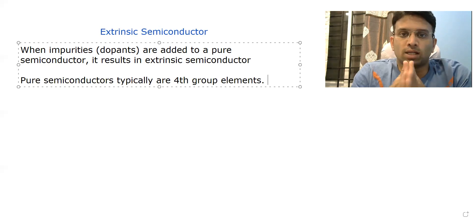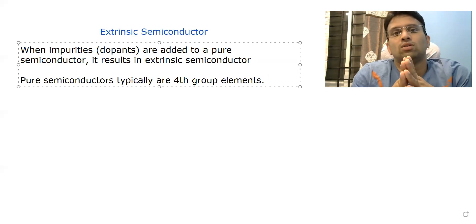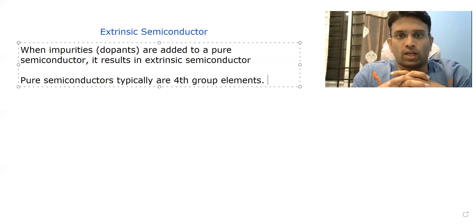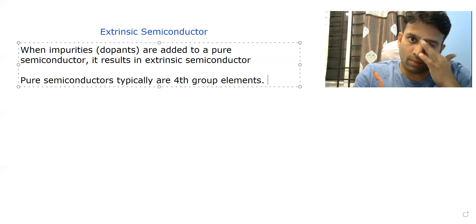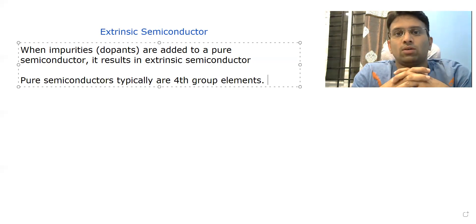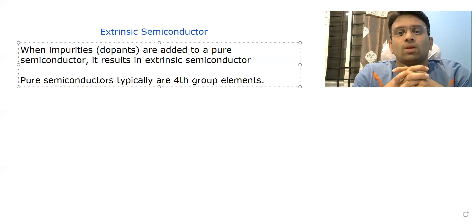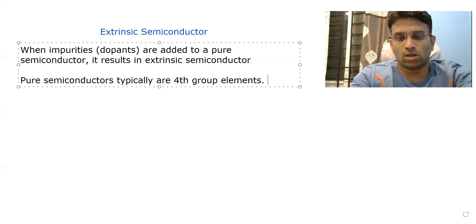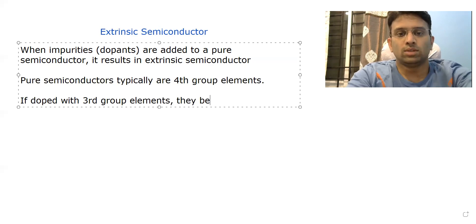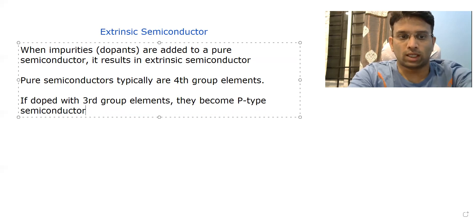Typically, in these intrinsic semiconductors, you have four valence electrons, and they form covalent bonds and achieve octet configuration. Some of the electrons jump into the conduction band, forming hole-electron pairs. However, if doped with third group elements, they become p-type semiconductors.